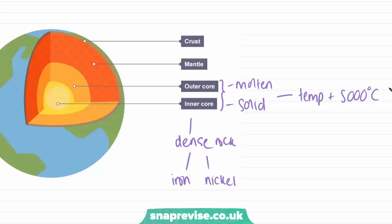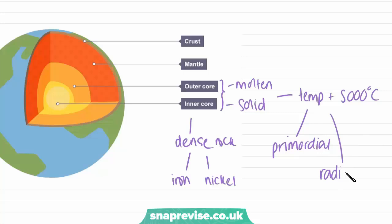The core is heated from two sources. One is called primordial heat, and this is heat that's been left over when the Earth was formed. We also have radioactive heat, and this is from the radioactive decay of some elements in the core, such as plutonium.